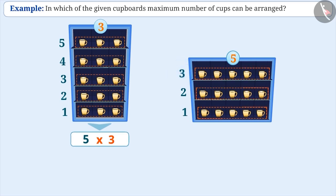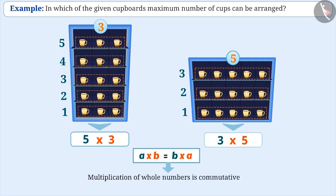Here, there are three rows in which five cups can be arranged in each row. So a total of three times five cups can be arranged in the second cupboard. Since multiplication of whole numbers is commutative, either we do three times five or five times three, the answer will be fifteen. This shows that fifteen cups can be arranged in both the cupboards.